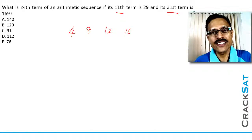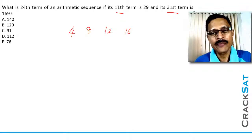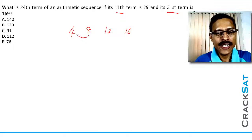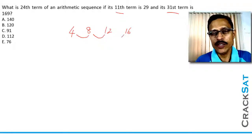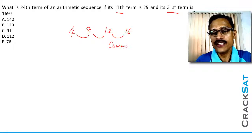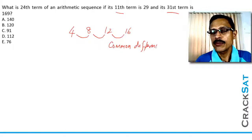Let's define an arithmetic sequence. An arithmetic sequence can be defined in one of two following ways. First, the difference between any two consecutive terms of an arithmetic sequence is always the same. Look at this — the difference between 8 and 4 is the same as the difference between 12 and 8, which is the same as the difference between 16 and 12. This difference between any two consecutive terms is called the common difference of the arithmetic sequence, usually represented by the letter D.